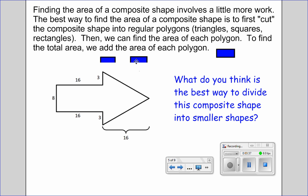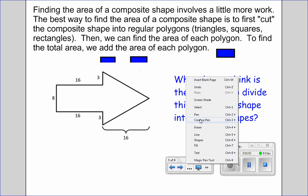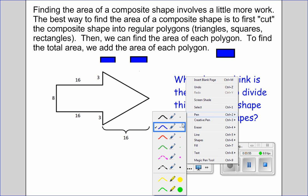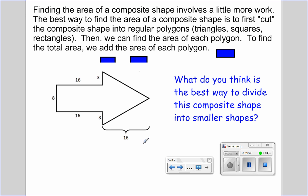So here's a question for you. I'll give you the answer, but you're going to try this on your own first. What do you think is the best way to divide this composite shape into smaller shapes? Take a look at the arrow shape. Just take some time to consider where you should draw a line that will cut this arrow into two shapes.